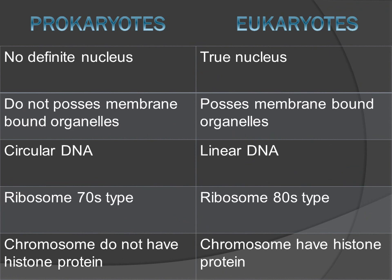Before learning about Archaea, Bacteria, and Eukarya in detail, we must understand the difference between prokaryotes and eukaryotes. There are two types of cells: prokaryotic and eukaryotic. The first difference is that prokaryotes have no definite nucleus, whereas eukaryotes have a true, well-defined nucleus.